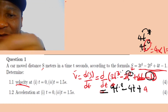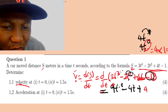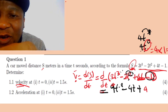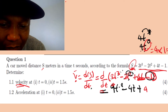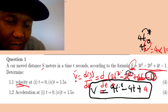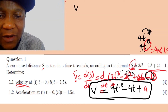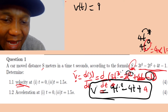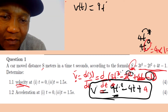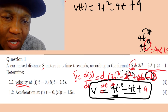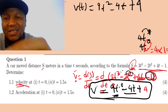So when you differentiate the constant, you get 0 — there's no need to write anything for it. This result is our velocity, because when you differentiate distance you get velocity. So velocity equals 9t² minus 4t plus 4.